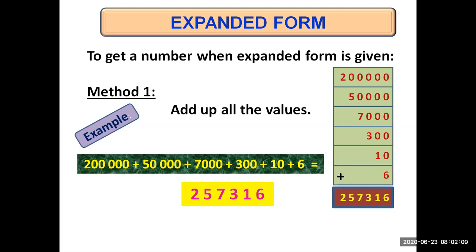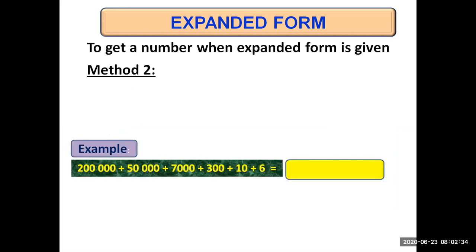But for this method it's a bit complicated because you need a lot of space to write these numbers vertically, write them according to their columns, and then add them all up. The better method is the second method, which seems to be the longer one but it's all going to be done in your heads. Second method: just remember a few points and you will write the number directly.